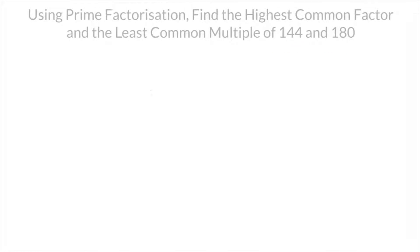To do this, the first thing we have to do is write both 144 and 180 as products of their prime factors. Now we've seen the method for doing that, so I'll go quite fast here. If you're unsure of how to write a whole number as a product of its prime factors, make sure to look through the previous section or watch the previous tutorial.